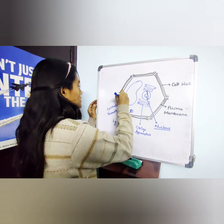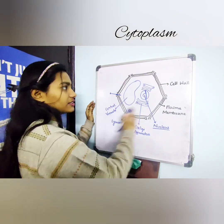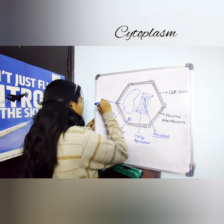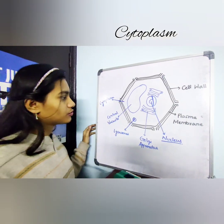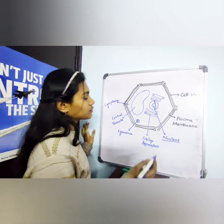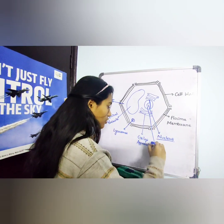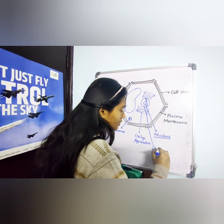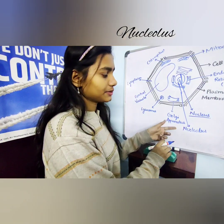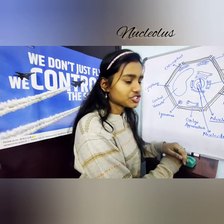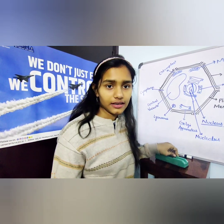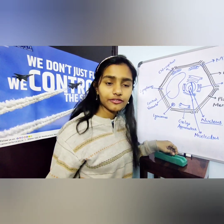The next is cytoplasm. This is the fluid that covers all of the cell. Cytoplasm is basically the fluid in which all of these cell organelles are suspended. Also, there's a part of the nucleus I forgot to mention, which is the nucleolus. The nucleolus is a round structure present in the nucleus which helps in the synthesis of ribosomes, which in turn form protein for the plant cell.